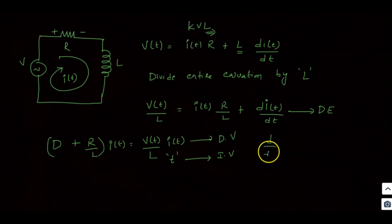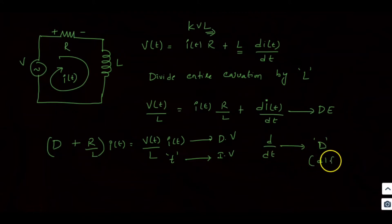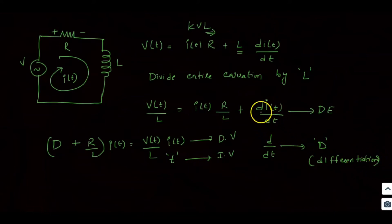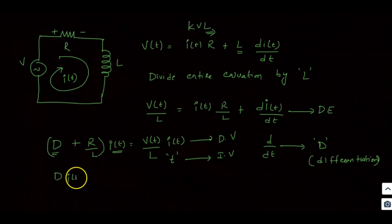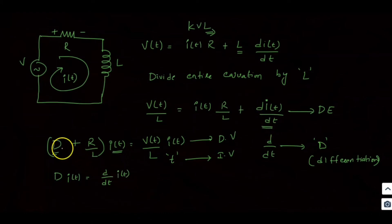Here, d by dt is represented as capital D — where capital D stands for differentiation. So di(t)/dt is written as D·i(t). Taking i(t) as the common factor, the equation becomes (D + R/L)·i(t) = V(t)/L.